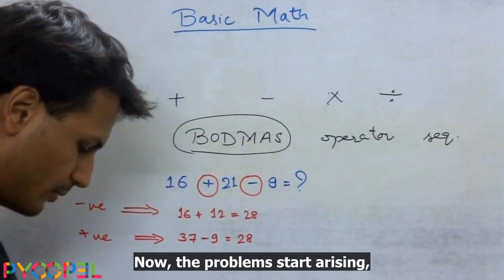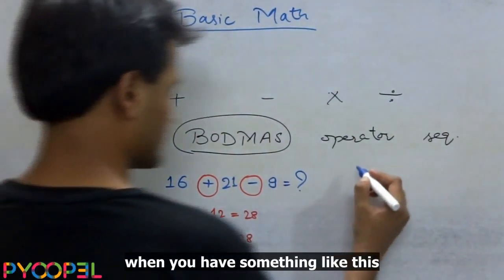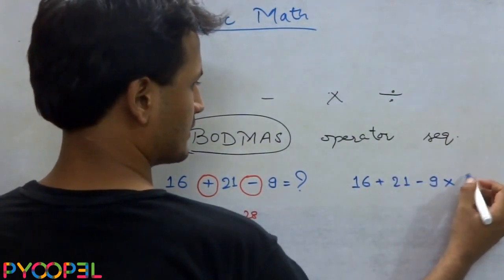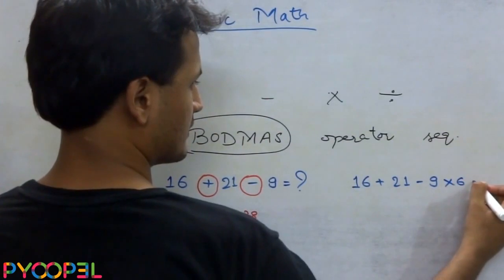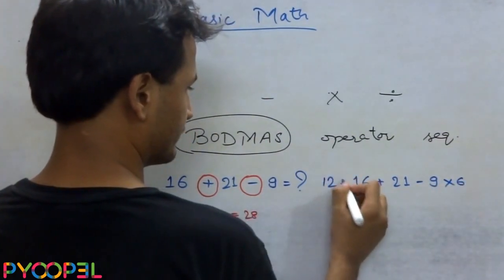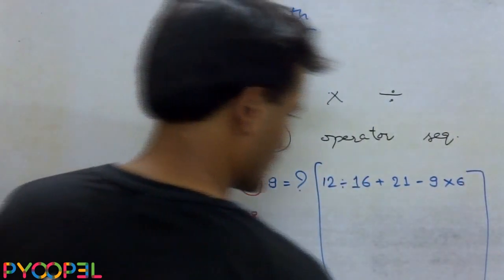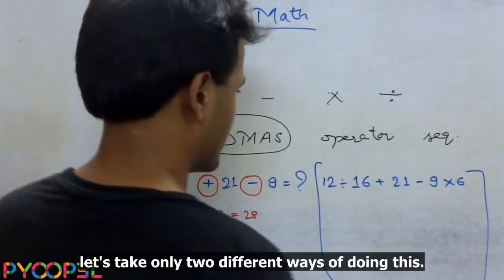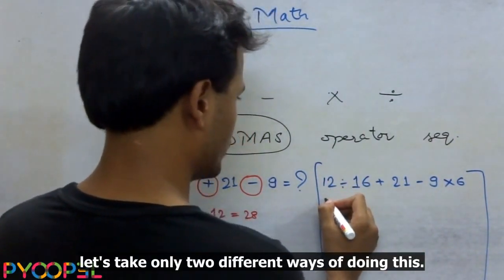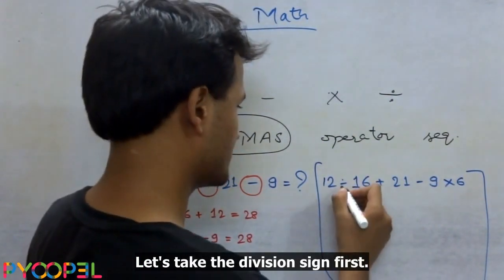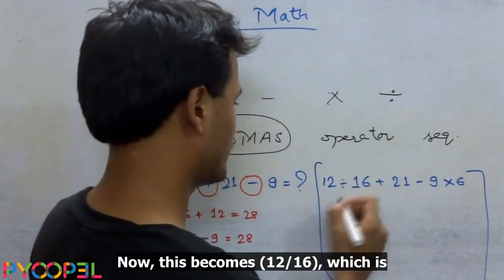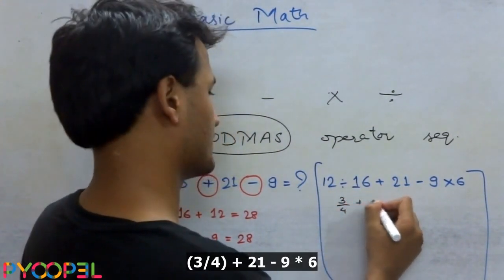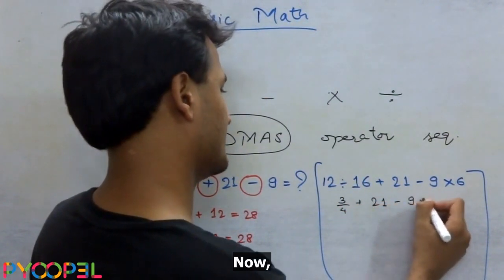Now the problems start arising when you have something like this. In this case, if suppose you take, let's take only two different ways of doing this. Let's take the division sign first. Now this becomes 12 by 16 which is 3 by 4 plus 21 minus 9 into 6.